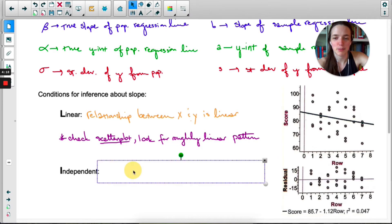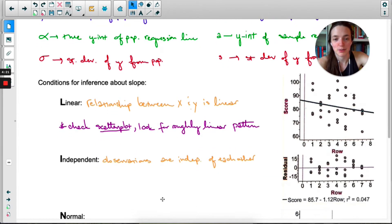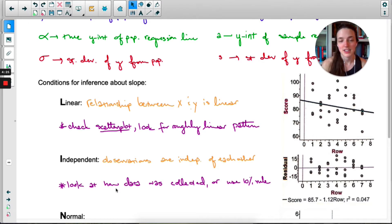Second condition is independent. All observations have to be independent of each other, so look at how the data was collected. You don't have to use the 10% rule if you can verify each person did not affect the others. In this case one person's test score could be affected by who they're sitting next to, but we can use the 10% rule and say there's more than 300 students.